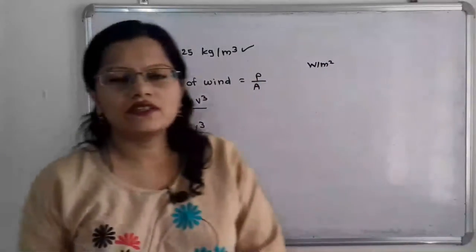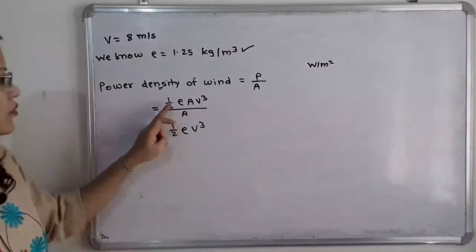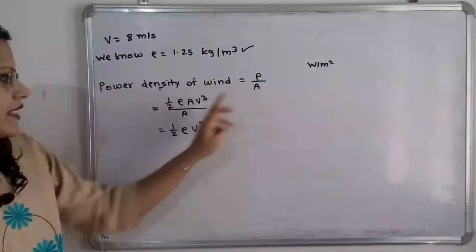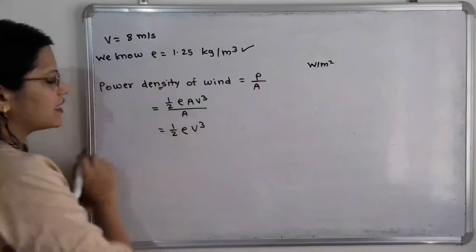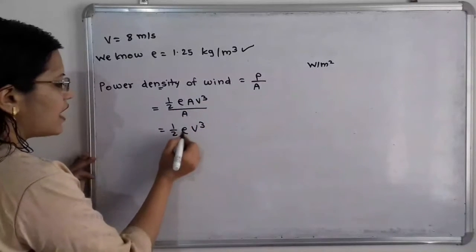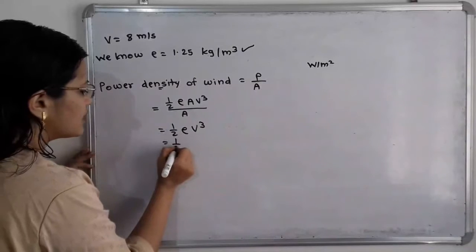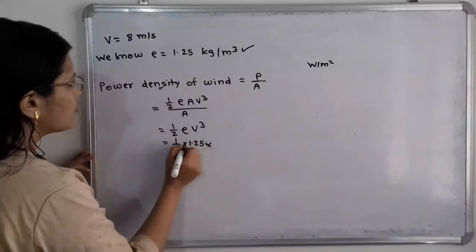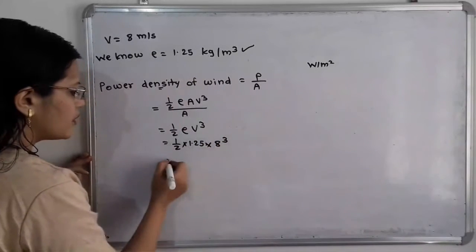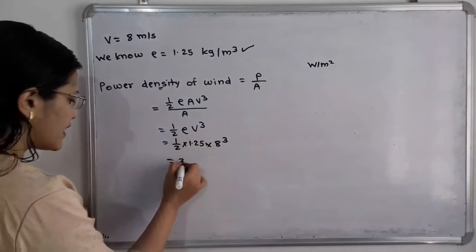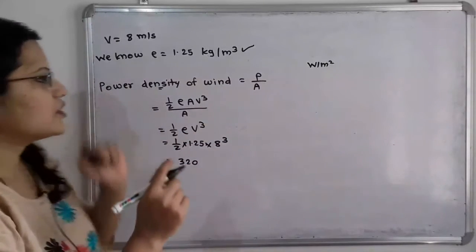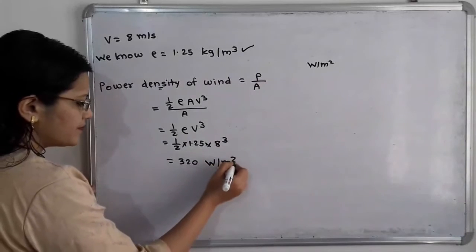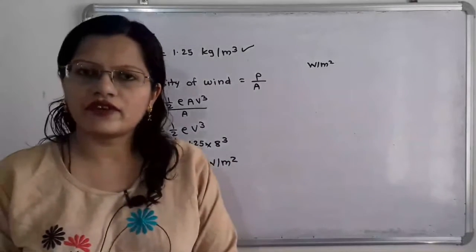The power of the wind is equal to half rho A V cube, and per unit area we divide by A, so A cancels out. What remains is half into rho into V cube. Putting in the values: half into 1.25 into 8 cube gives us the answer 320 watts per meter square. This is the answer to the first question.